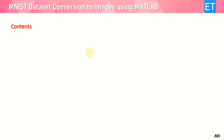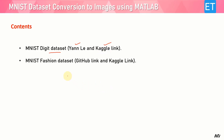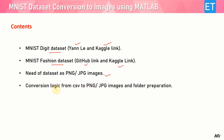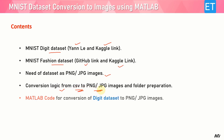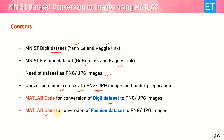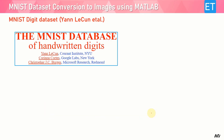Let's have a look at the contents of this video. First, I will explain the MNIST digit dataset and give you the original link of Yann LeCun and its Kaggle link. Then I will show you the MNIST fashion dataset and its corresponding GitHub link and Kaggle link. Then I will explain the need for converting this dataset into PNG and JPEG images, and give you the conversion logic to convert all the CSV files to PNG and JPEG images in corresponding folders. I will also explain the MATLAB code for both datasets.